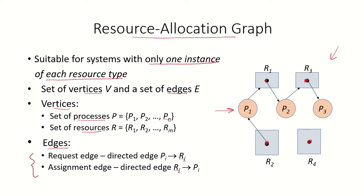The edges are of two types. The request edge means a particular process is requesting a particular resource — like in this case P1 is requesting R1. The assignment edge represents that a particular resource has been assigned to a particular process. Here we can see the assignment edge which shows that this instance of R2 has been assigned to process P1.